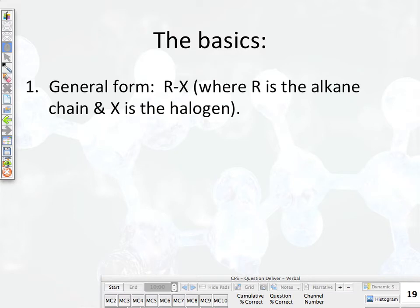Okay, so the basics. We've got that general form, R-X, where R is some alkane chain and X is the halogen. So again, fluorine, chlorine, bromine, iodine. I suppose astatine could theoretically be, but it's not very stable, so probably not. Not very prevalent in nature. Yeah. That would be funny.